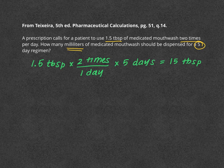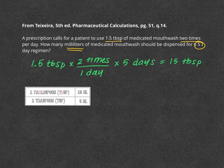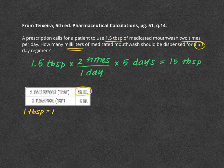Now we need to convert from tablespoons to milliliters. We recall that one tablespoon is equal to 15 mL. You might see one tablespoon abbreviated as TBSP, or as one capital T.